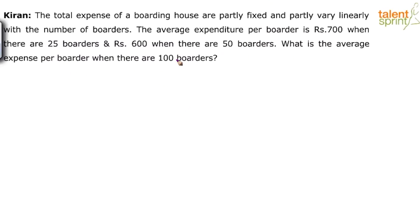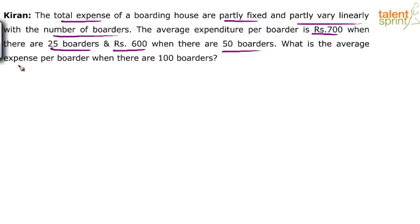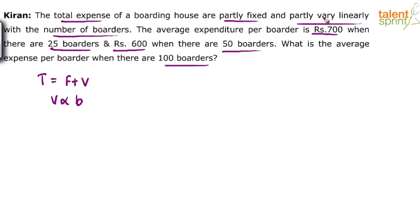The total expense is partly fixed and it partly varies linearly with the number of borders. There is a fixed component and then there is a variable component. This variable component is proportional to the number of borders — more the number of borders, more will be the variable; less the number of borders, less will be the variable.